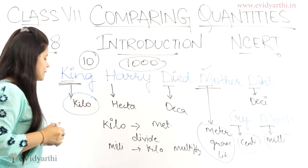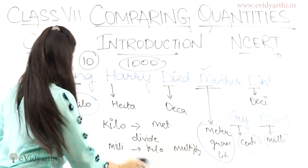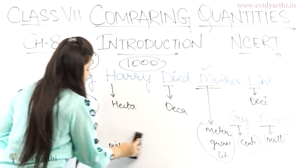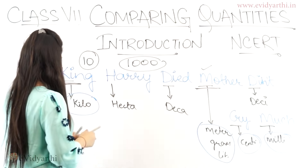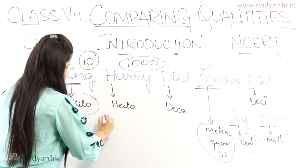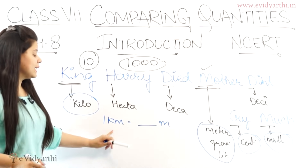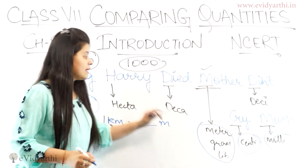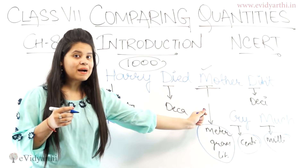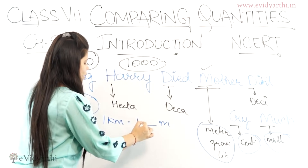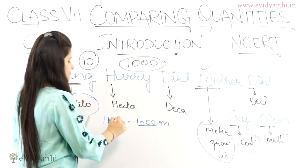You will be able to remember all these different quantities. Now the important point: if I say 1 km equals how many meters — in 1 km, counting the gaps: 10 × 10 × 10 = 1,000. This is a multiplication because we are going from big to small — from kilometer to meter.